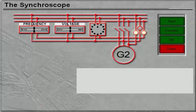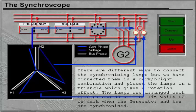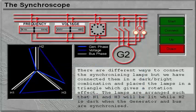There are different ways of connecting the synchronizing lamps, but we have connected them in a dark-bright combination and placed the lamps in a triangle which gives a rotation effect. The lamps are arranged so that H1 and H3 will be lit while H2 is dark when the generator and bus are synchronized.